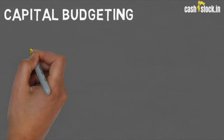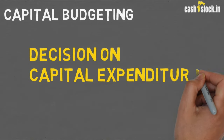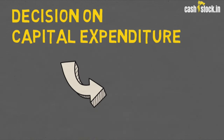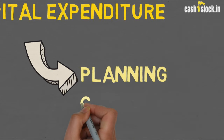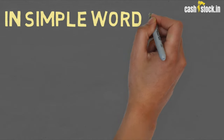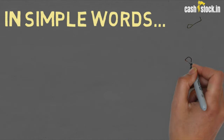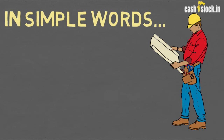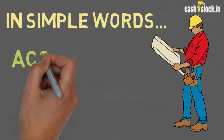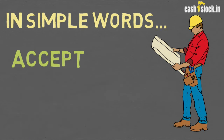Capital budgeting is the process of making investment decisions in capital expenditure. Further, it involves the planning and control of capital expenditure. In simple words, if anyone asks you what is capital budgeting, you can say it is the process of deciding whether to accept or reject a project on the basis of the benefits it will provide to the company in future.